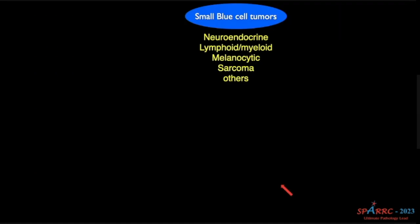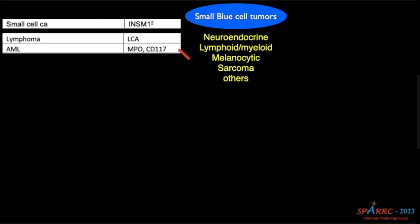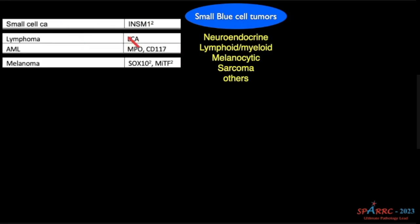Differential diagnosis of small blue cell tumor — these are the five major types: neuroendocrine tumors, lymphoid or myeloid tumors, melanocytic tumors, spindle cell tumors, and others. These are the broad differential diagnoses. Neuroendocrine tumor: small cell carcinoma — INSM1. Lymphoma: LCA. For myeloma it is MPO and CD117.